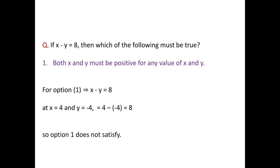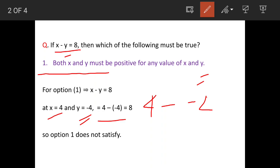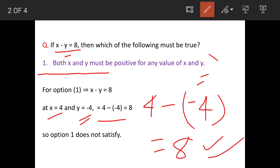We will examine statement one first. x minus y equals 8. As per this statement, both x and y must be positive to get this result. But it is possible with other values also. For example, if we keep x equal to 4 and instead of taking a positive value of y, we use a negative value, we get 4 minus negative 4, which is still 8. So since we satisfy the equation with a negative y, this statement is incorrect.